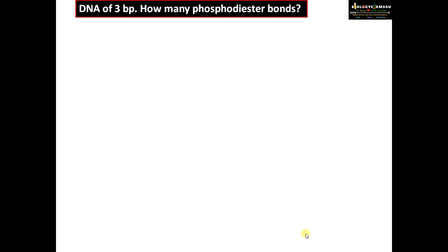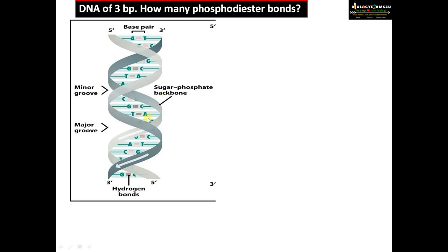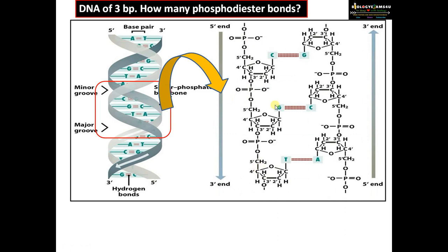Now let's see how we derive this equation. Here is a DNA molecule. Let's take a region with three base pairs and zoom in. In the first strand, we can identify the phosphodiester bonds — this is the first phosphodiester bond, a C-O bond, and this is the second C-O bond connecting two nucleotides. We have a separate video on phosphodiester bond formation for more information. So in a single strand with 3 base pairs, there are two phosphodiester bonds.